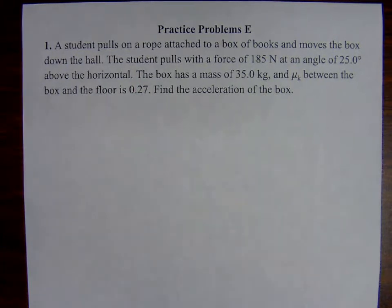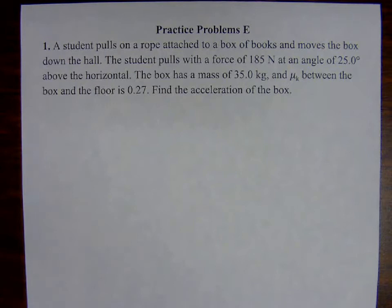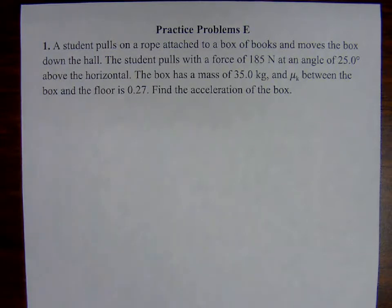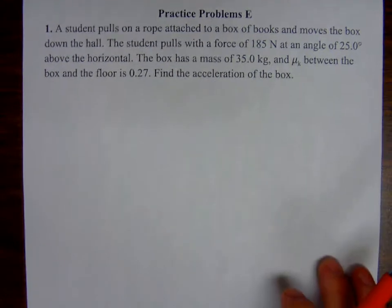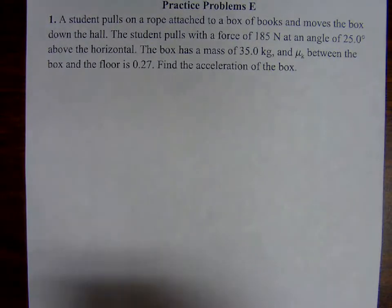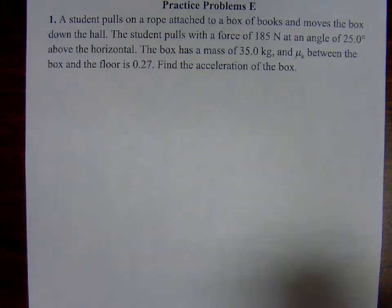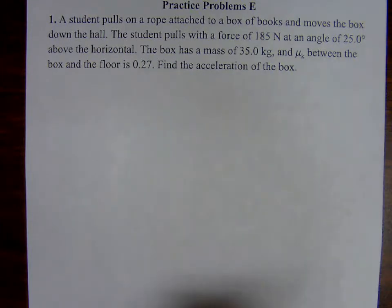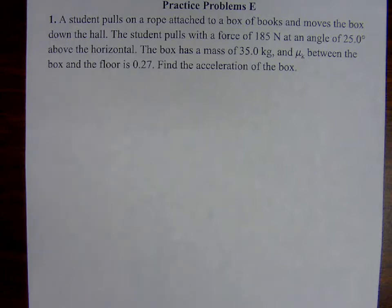Let's take a look at practice problem number one associated with problem E. This is going to get a little hairy, so let's dive in — there's going to be a lot of explanations. I'm going to write things down so you can see conceptually why we're going with the calculations we're using. A student pulls on a rope attached to a box of books and moves the box down the hall. The student pulls with a force of 185 newtons at an angle of 25.0 degrees above the horizontal.